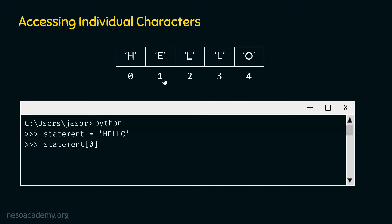If we want to access the second character of the string, we need to pass the value one within the square brackets. We can hit enter and we will get the character H. If we want to access the next character, we write two instead of zero, hit enter, and we will get L as output. In this way, we can access individual characters of a string in Python.